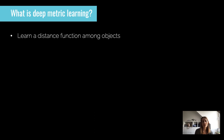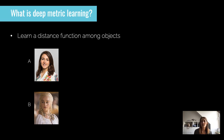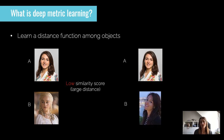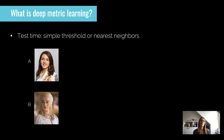In Deep Metric Learning we want to learn a distance function between images of objects. For example, we could have images of cups and trees and want to get the distance between those, or we could use the distance between persons. We want the distance between two different persons — one blonde, one brown-haired — to be pretty high, so we want a low similarity score and a large distance.